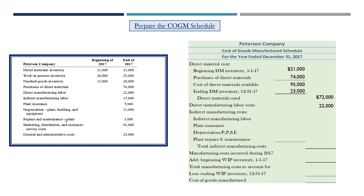Taking the numbers from our information: $17,000 of indirect manufacturing labor, $7,000 of plant insurance, $11,000 of depreciation on plant assets, and $3,000 spent on repairs and maintenance — adding them all together gives $38,000 worth of costs directly related to the production process that can be inventoried but cannot be easily traced. Those are our indirect manufacturing costs. So now we know direct materials used, direct labor used, and indirect costs incurred — those are our three inventoryable cost components, our total manufacturing costs.